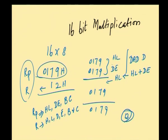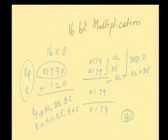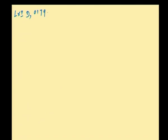The 16-bit multiplicand is added the multiplier number of times. I select the register pair: LXI D, the 16-bit multiplicand which is 0179H. Then I initialize the multiplier: MVI B, 12H. After initializing, the multiplicand should be added multiplier times. I cannot use the accumulator for addition; I have to use only the HL register pair. So before starting the addition, I have to clear the HL register pair.